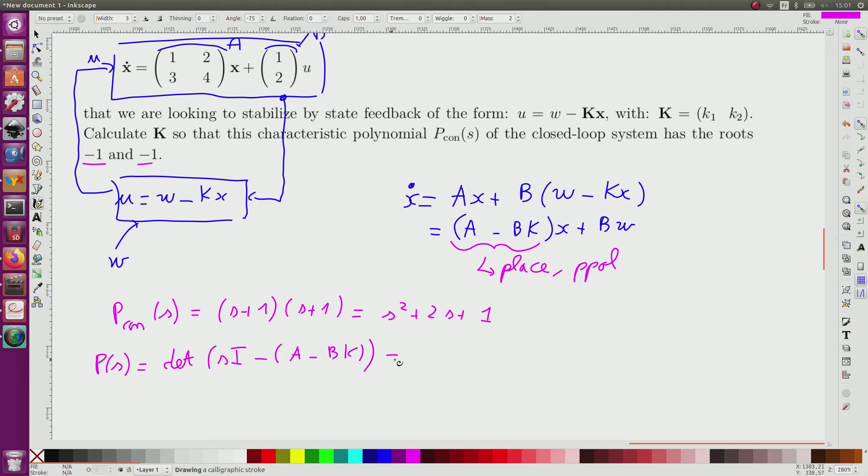So which is equal to the determinant of S identity. So A minus BK will be here 1, 2, 3, 4 for A, and for BK it will be B. So it's 1, 2, so plus because minus minus,